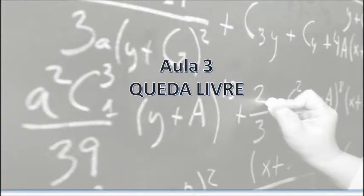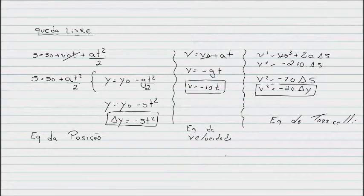We are going to talk about queda livre (free fall). Here we have the position equation: position equals initial position plus initial velocity times time plus acceleration times time squared divided by 2. It's like a monster, right?